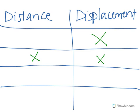Do you remember which quantity is a scalar? That would be distance. Do you remember which quantity requires a direction? That would be displacement because it's a vector. Displacement requires both magnitudes, the number, and direction.